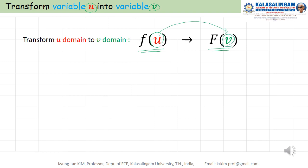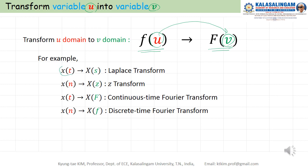For example, in case of X of T to X of S, of course S is a complex number, we call this Laplace transform. And X of N in case of waveform X of N to X of Z, we call this Z transform. And also X of T to frequency domain X of F, we call this continuous-time Fourier transform. And also in case of discrete X of N to X of F frequency domain, we call this discrete-time Fourier transform.